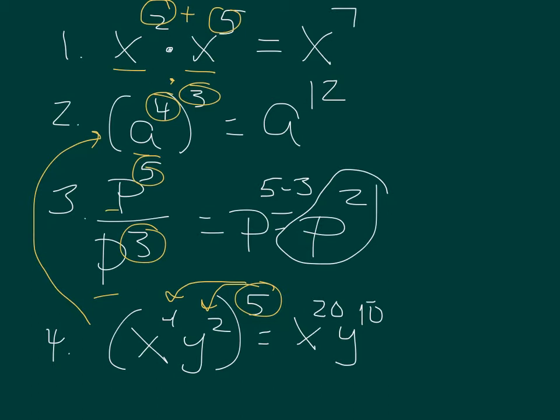All right, new slide. Let's look at number five. Five is just one fraction, a over b all to the third. Again, same idea, we're taking that exponent and distributing it to both letters. So this is quite simply a to the third, b to the third. Straightforward.